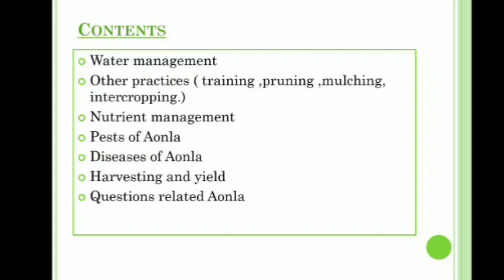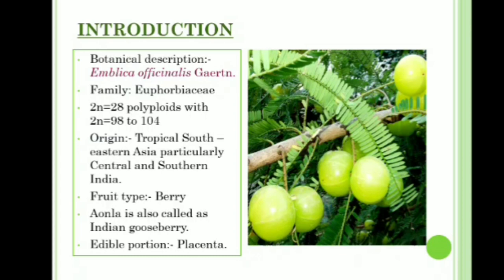Introduction and botanical description: the scientific name of Amla is Phyllanthus emblica, family Euphorbiaceae. 2n is equal to 28, polyploid with 2n equal to 98 to 104. Its origin is tropical southeastern Asia, particularly central and southern India. The fruit type is berry. Amla is also called Indian gooseberry. Its edible portion is the placenta.